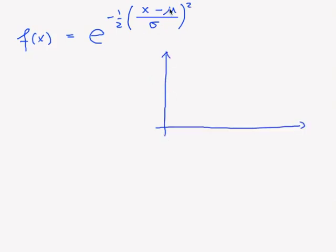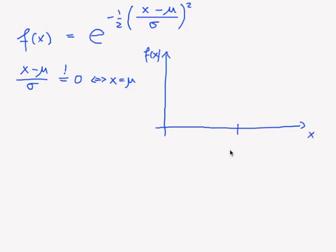Now if we plot this function, we will have the following. (x minus mu) divided by sigma is zero, independently of sigma, when x equals mu. So here you have x, f(x), and here at mu, our exponent is zero.